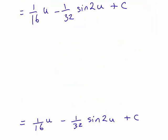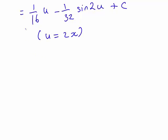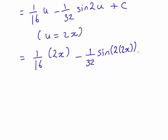Are we finished? No, we still need to rewrite this in terms of x. And recall that we had u equal to 2x. Therefore, our expression here becomes 1 divided by 16 times 2x minus 1 divided by 32 sin 2 lots of 2x plus c.